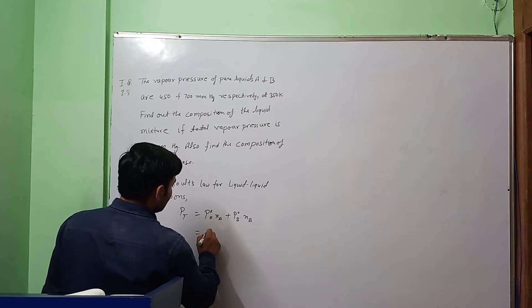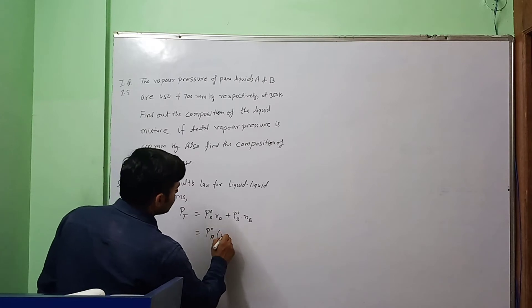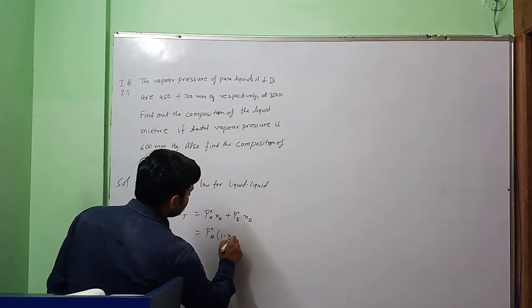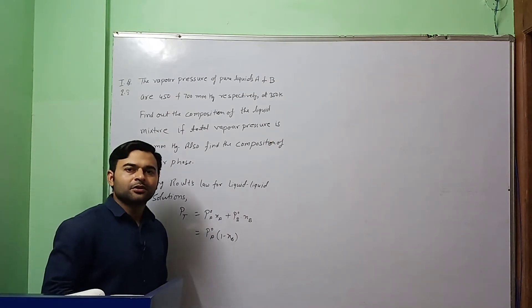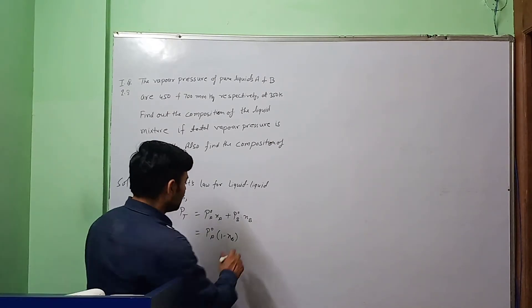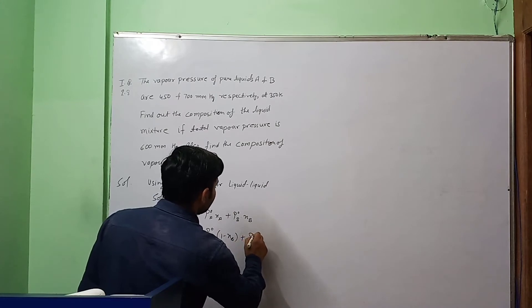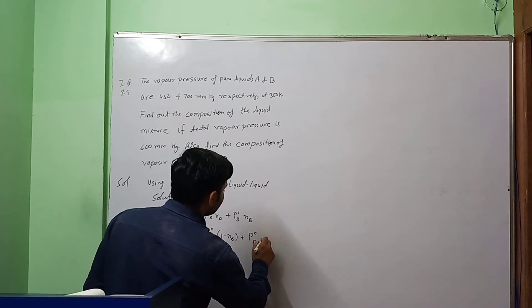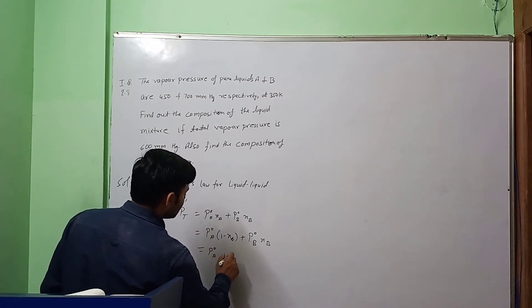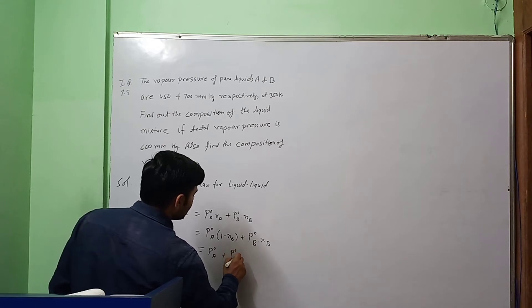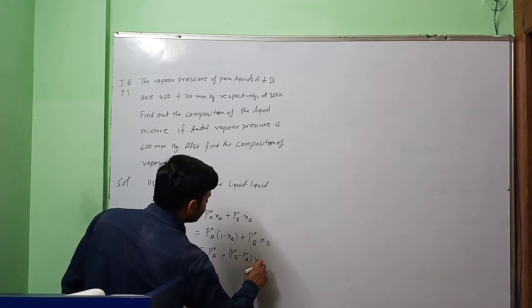This we can rewrite for binary solution as P0A. XA can be written as 1 minus XB because sum of mole fractions of a solution is unity, plus P0B into XB. We will arrive to another form of Raoult's law that is P0A plus P0B minus P0A into XB.